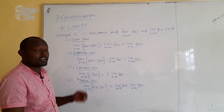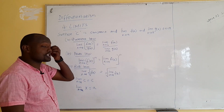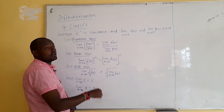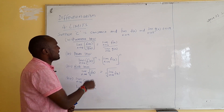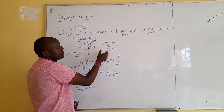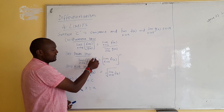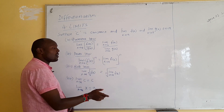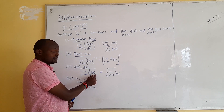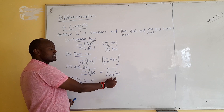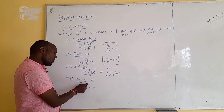We have another four rules. The fifth rule is what we call the quotient rule. If you have the limit of a fraction — two functions where one is over the other — it is the same as having the limit on the numerator divided by the limit on the denominator. The power rule: the limit of a function to power n equals the limit of that function, all raised to power n. The root rule: if you have the nth root of a function under a limit, you can first get the limit of the function, then take the nth root.